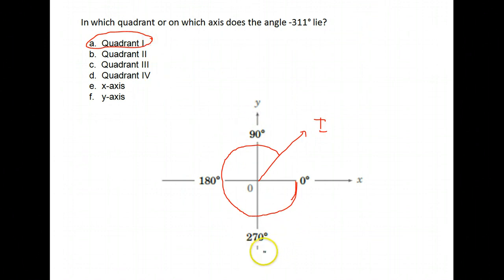So you may want to label, if you have this in your notes, you may want to label this is negative 90, this is negative 180, this marker is negative 270, and this is negative 360.